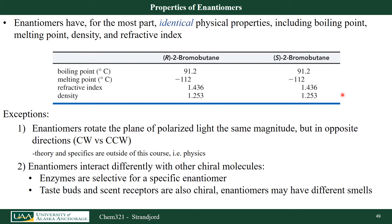There are a few exceptions, and those exceptions are very important. They allow us to identify which enantiomer we have, and they also play a big part in biochemistry. Enantiomers rotate the plane of polarized light the same magnitude but in opposite directions. For example, R 2-bromobutane might rotate it clockwise or counterclockwise, but S 2-bromobutane would rotate it in the completely opposite direction.